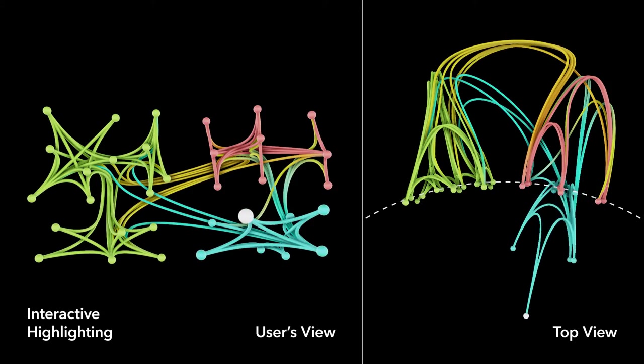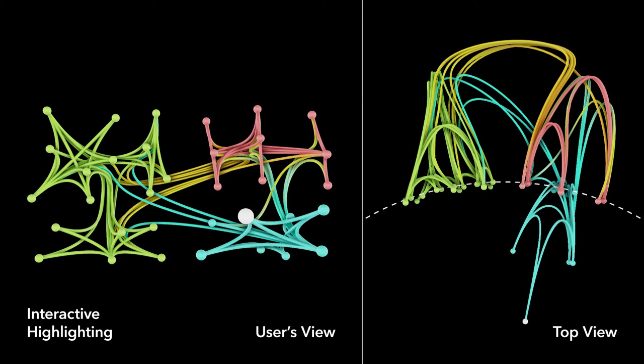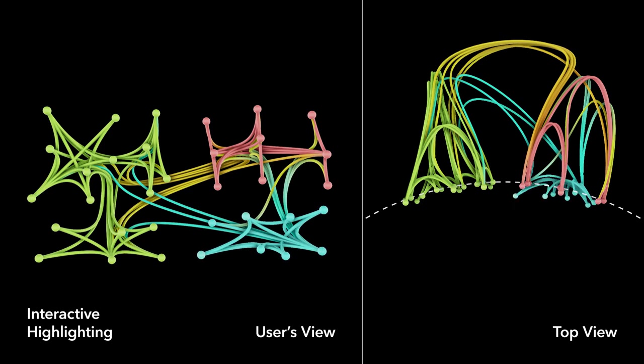When the user selects a node, it and all its neighbors are brought closer to the user's viewpoint. Edge control points are also brought closer so that the relevant edges are separated from the rest of the graph. In this manner, users can create a working memory by moving nodes of interest into a focal sphere for close inspection.